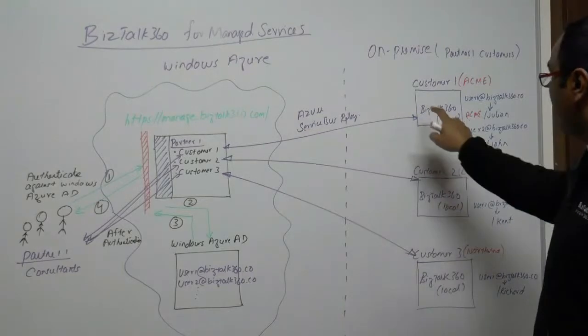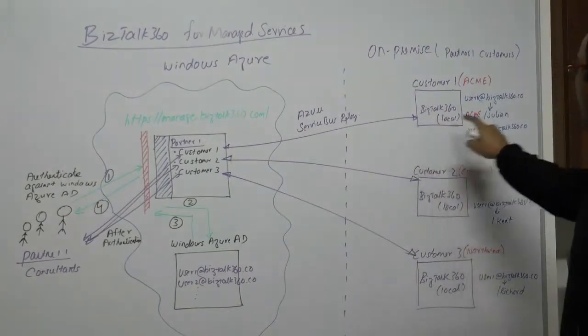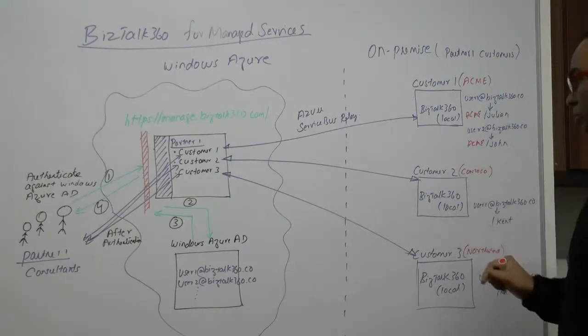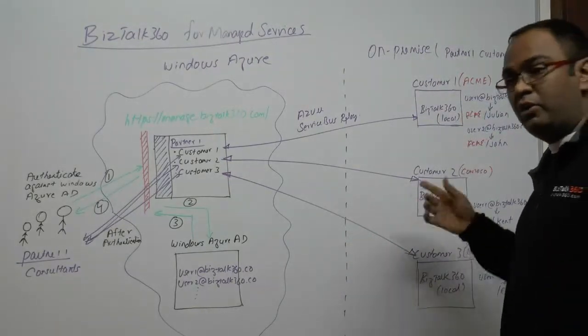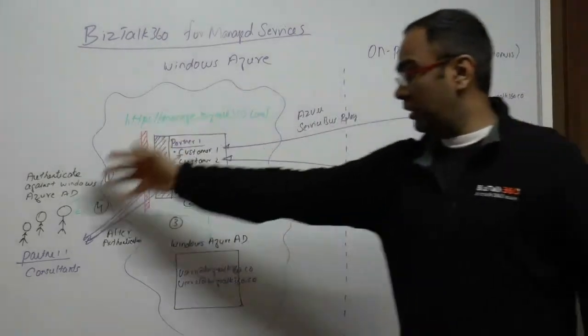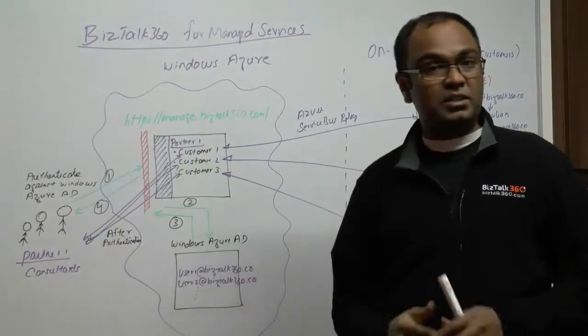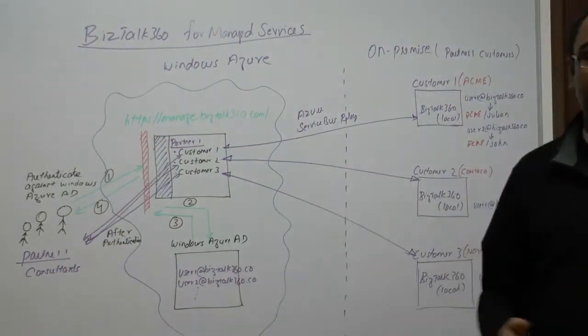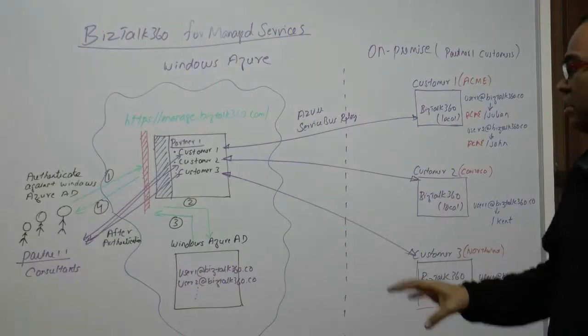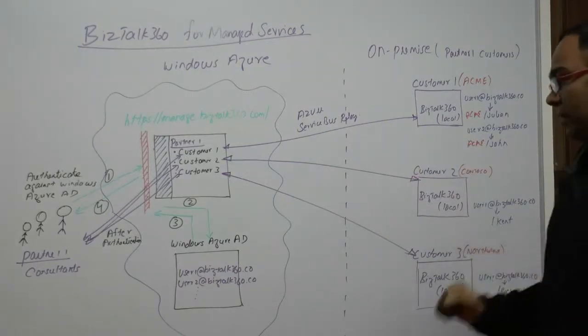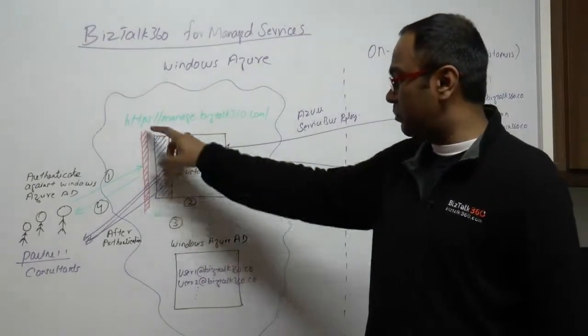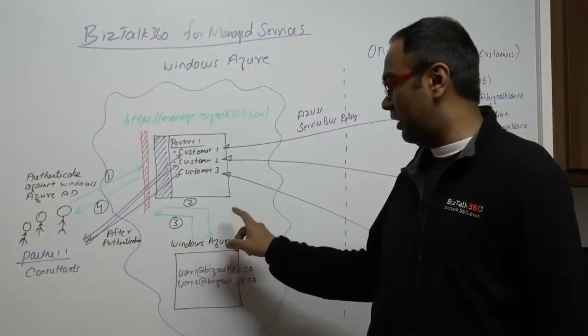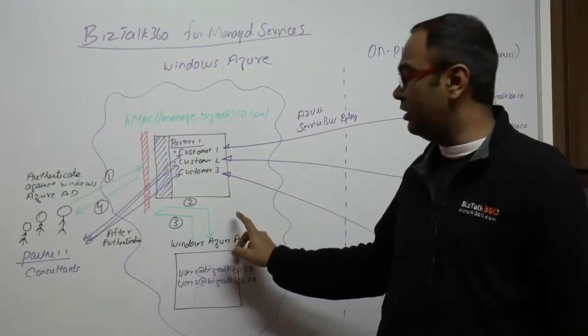We're not flowing the Windows authentication all the way through from the customer side to the partner. It's not safe and there are a lot of challenges around that, so this is the mechanism we are following. The manager.ms360.com is protected by Windows Azure AD for authentication. Whenever the users hit the portal, they will be challenged with the standard Windows Live ID kind of authentication screen.